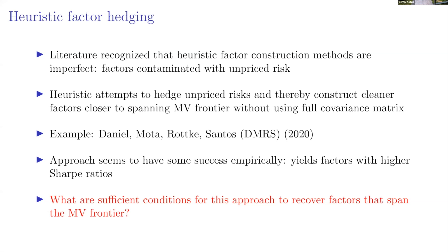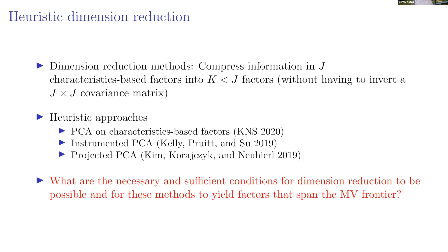The last question relates to the large recent literature on dimensionality reduction. The idea is that perhaps we have too many characteristics and too many factors, so instead of 100 factors we want a model with a smaller number of latent statistical factors. Examples include our paper 'Shrinking the Cross-Section,' Kelly, Pruitt, and Su's Instrumental PCA, and the Projected PCA paper by Kim, Korejzyk, and Neurel. The third question is: what are the necessary and sufficient conditions for dimensionality reduction to still yield mean-variance efficiency?